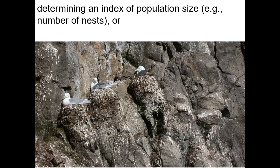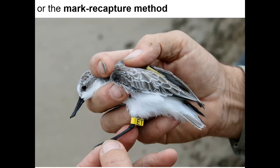Another way to estimate population size is to use an index. For example, if you count all the nests on a cliff for a particular bird species, it might be hard to count the birds directly because they fly away, but counting nests gives you a good idea of the number of breeding pairs and perhaps the number of babies that will be produced that year.